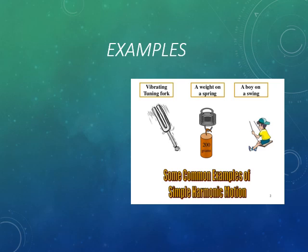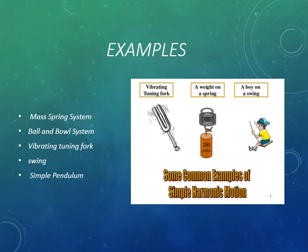Some basic examples of simple harmonic motion are: mass-spring system, ball and bowl system, vibrating tuning fork, swing, and simple pendulum.